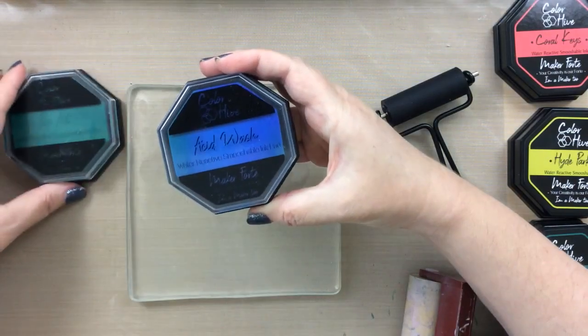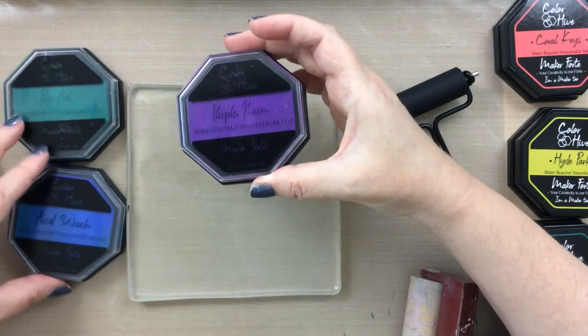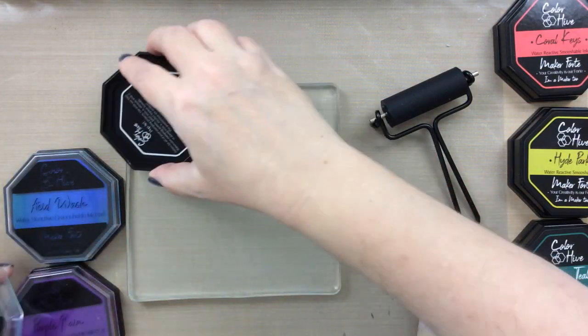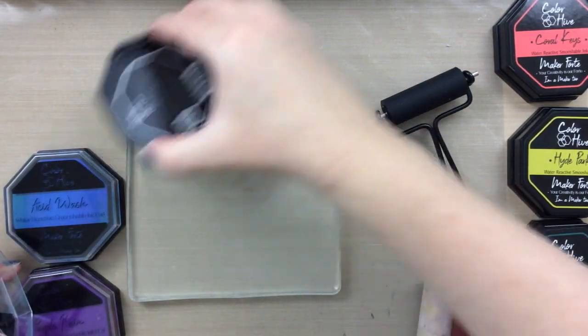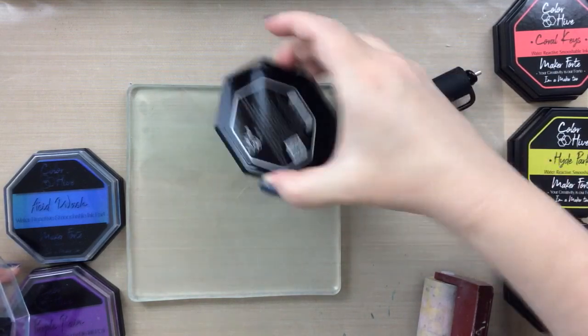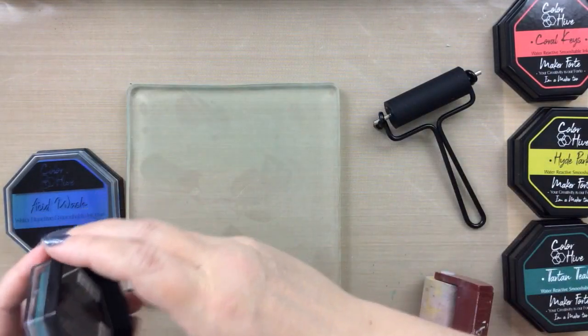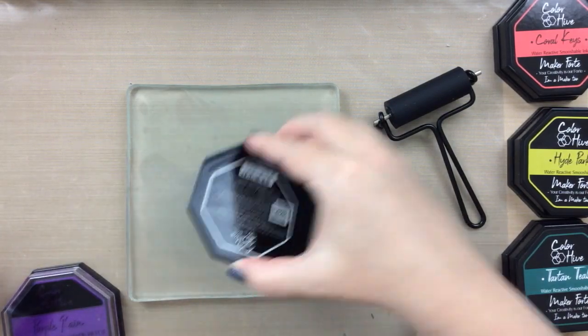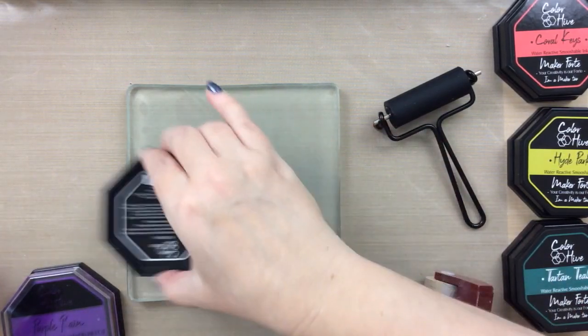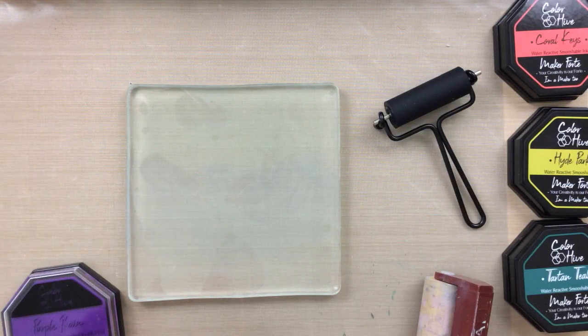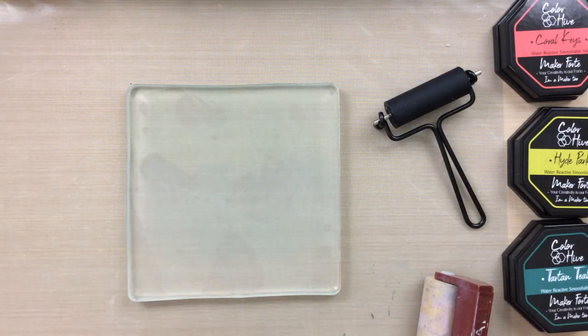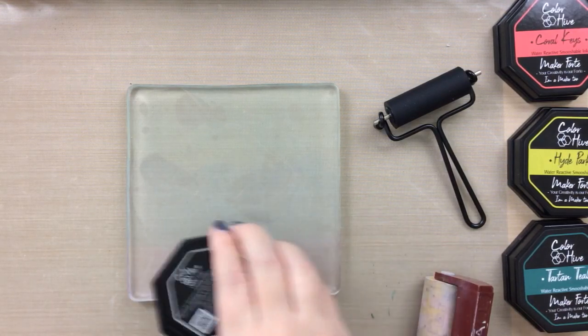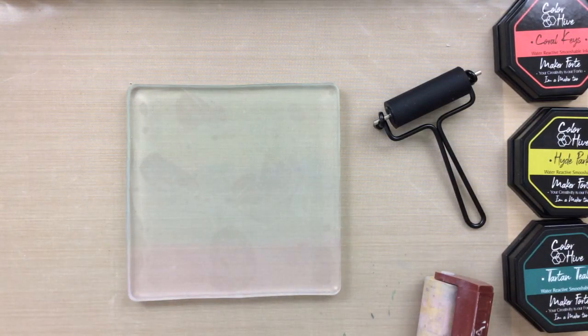So I wanted to start out by showing you the difference of using an ink pad versus a re-inker. And I think this will clear up a lot of questions. I love using re-inkers because they are very vibrant—the color is so concentrated. But to show you what it looks like using the ink pads, I'm going to start out with the exact same colors. So these ink pad colors are pop art, acid wash, and purple rain, some of my favorites.